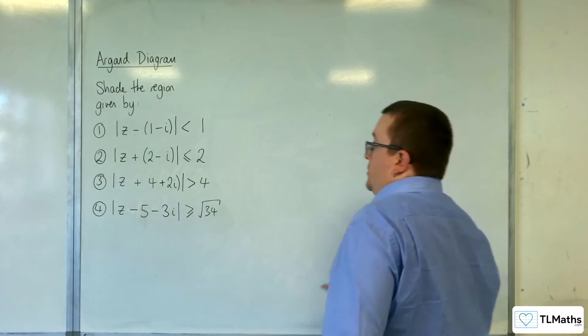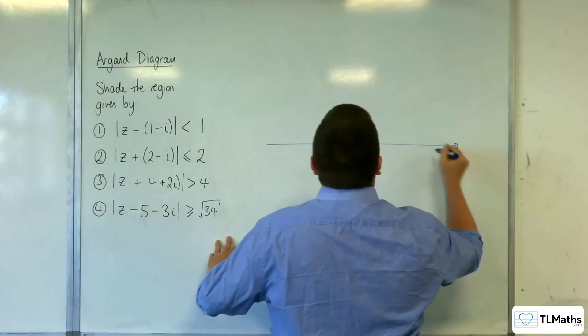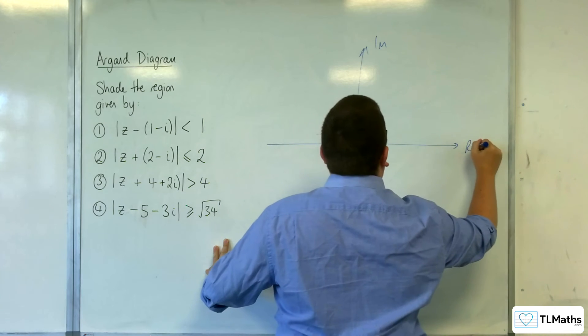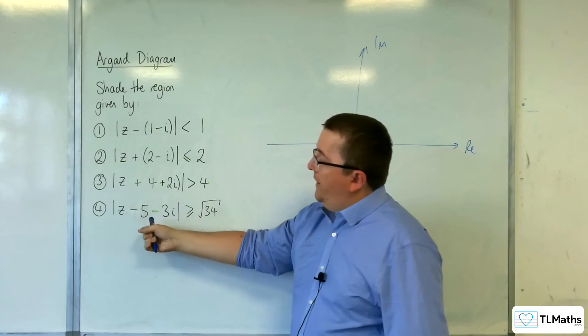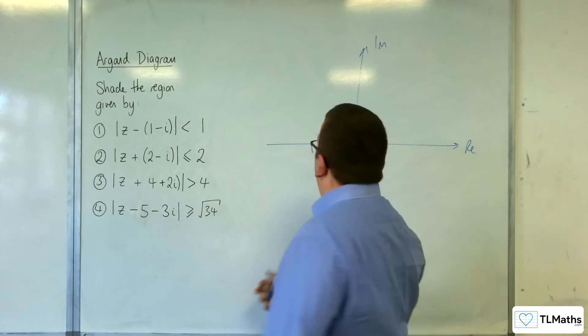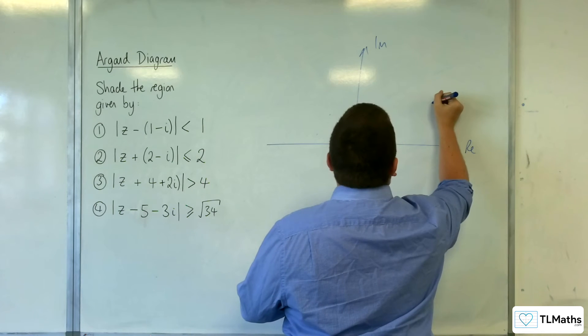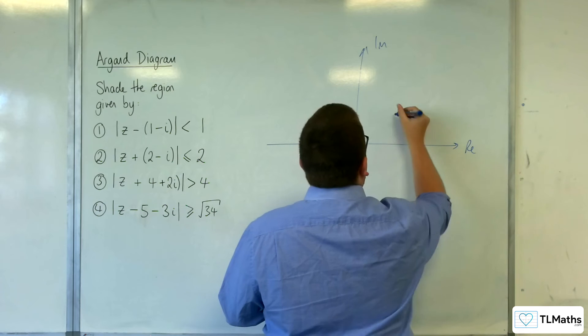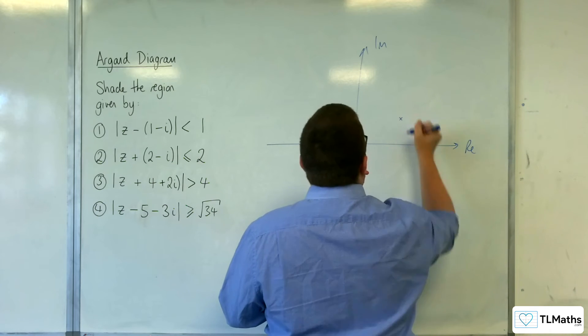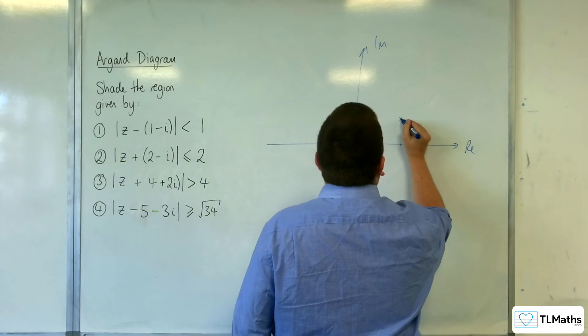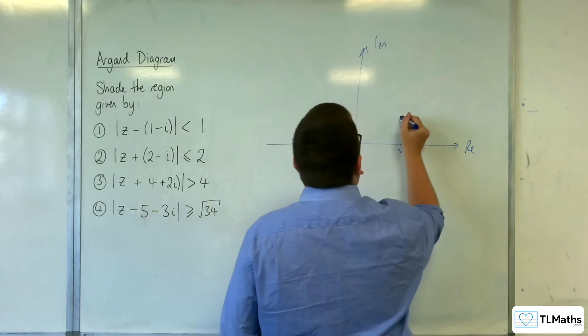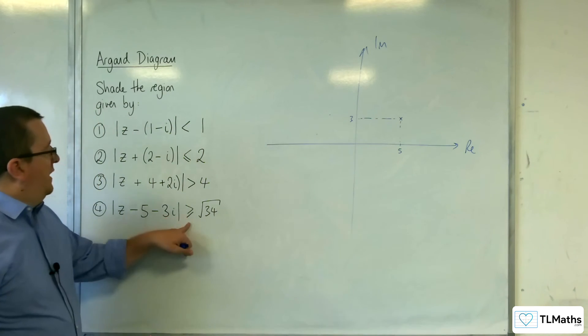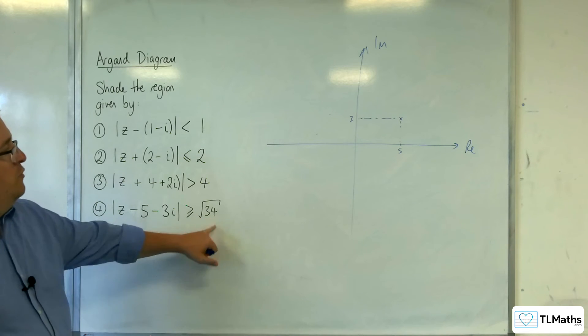And lastly, number 4. So we've got it centred at 5 plus 3i. So 5 along, 3 up. So something like that. Let's just make it a little bit closer. Like that. Right. Greater than the equal to 2. So it's a solid line. So we've got root 34.